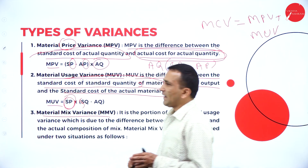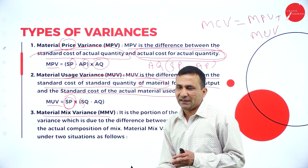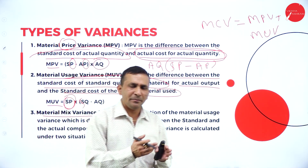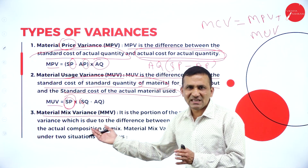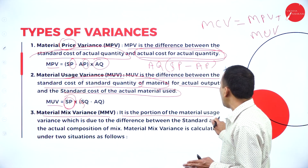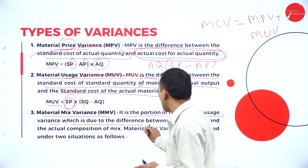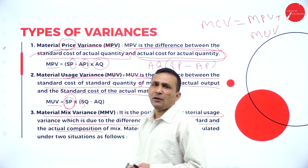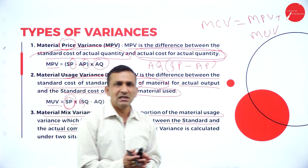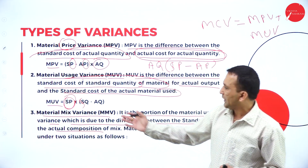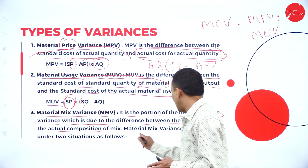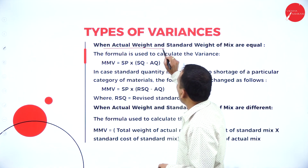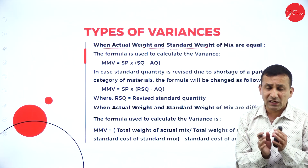The Material Mix Variance (MMV) arises when too many raw materials are used — Material A, Material B, Material C — which is a mix. It is a proportion of the material usage variance due to the difference between the standard and actual composition of the mix. To produce one final product, we use different materials mixed together. MMV is calculated under two situations.